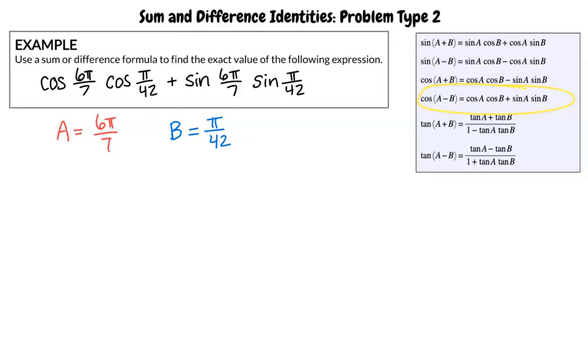Wait, how did you determine the values for A and B? Set cos(6π/7)cos(π/42) + sin(6π/7)sin(π/42) equal to cos(A)cos(B) + sin(A)sin(B).